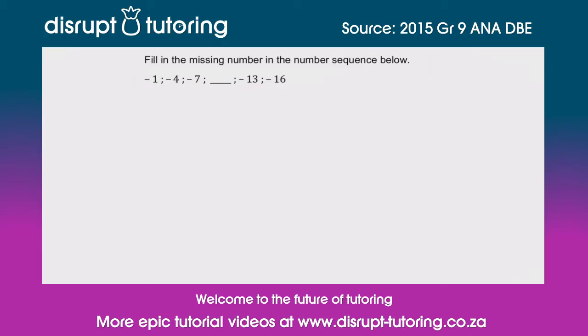They've asked us to fill in the missing number in the number sequence below. So the number sequence they've given us is -1, -4, -7, and then the blank where we need to insert the number, -13, -16.